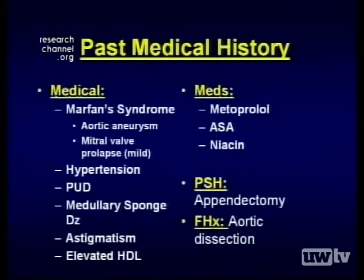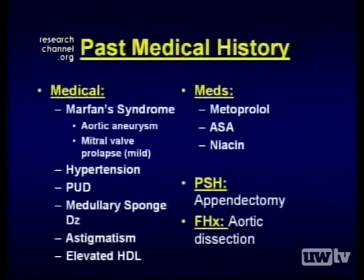Other significant past medical history for this gentleman included mitral valve prolapse, which was associated with his Marfan syndrome. He had a history of hypertension, peptic ulcer disease, medullary sponge disease of his kidneys, astigmatism, and elevated HDL. Medications at the time of admission included metoprolol, a beta blocker aimed at reducing his hypertension. He took an aspirin a day and niacin.